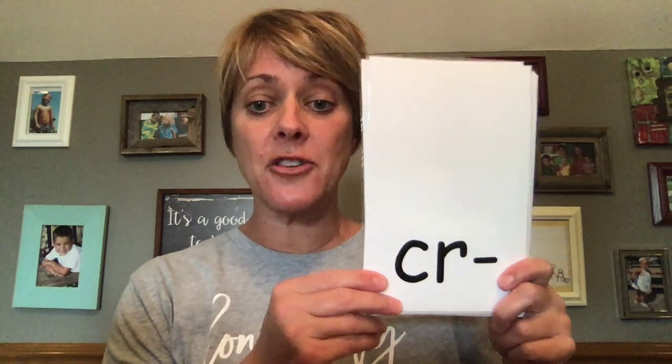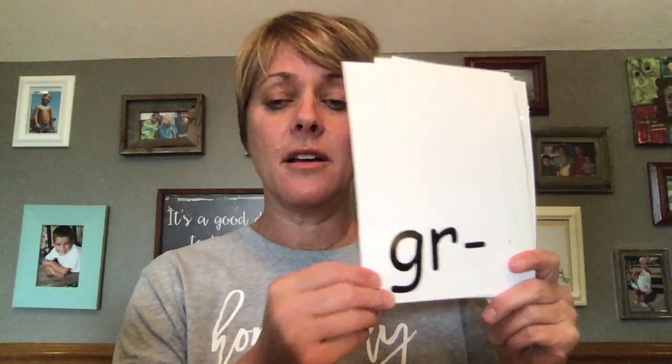Excellent job. The first thing I want you to do today with our cards is I just want you to say the letters as fast as you can. So the first round you'll say cr, tr, fr, like that. Here we go. cr, tr, fr, gr, pr, br, dr. Good job. Now we're going to say the sound that those two letters make — the blend. Here we go. cr, tr, fr, gr, pr, br, and dr. Good job. Excellent work today.